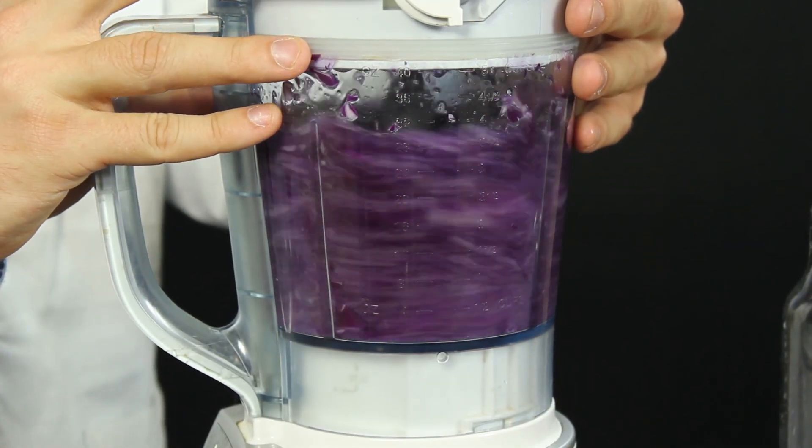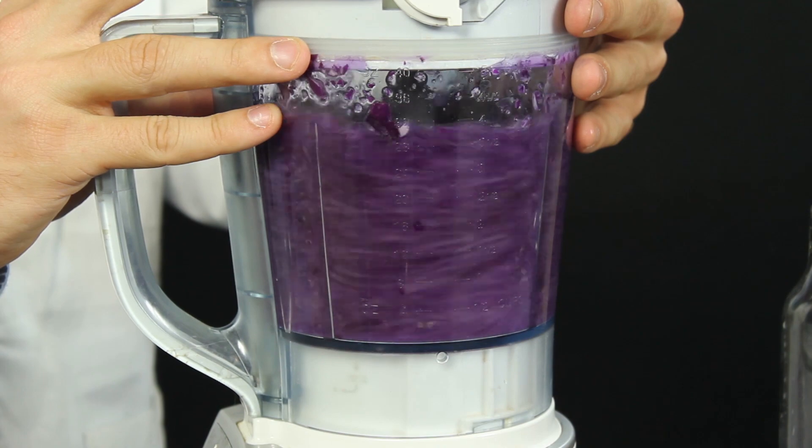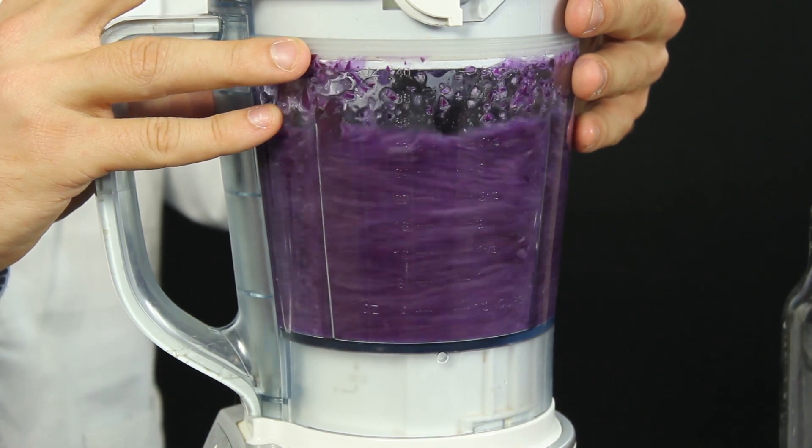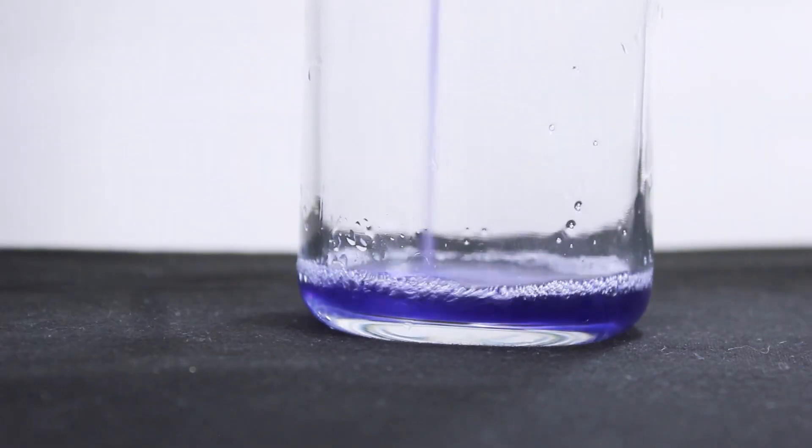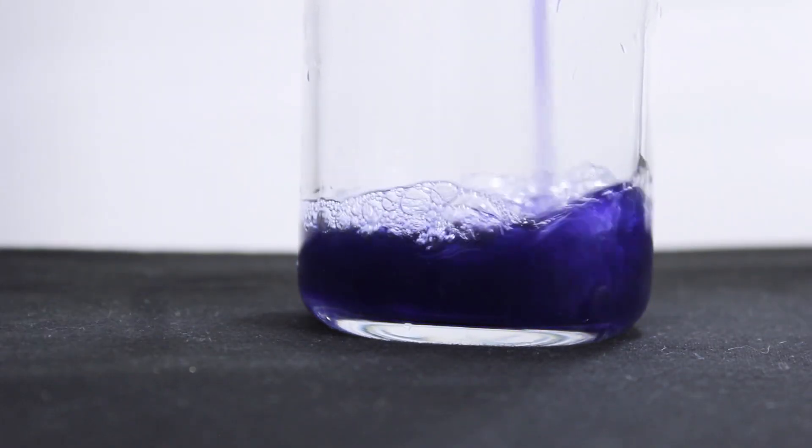What we're after is the molecule that gives red cabbage its purple color. Very carefully pour off the liquid, keeping the pieces of cabbage still in the blender.